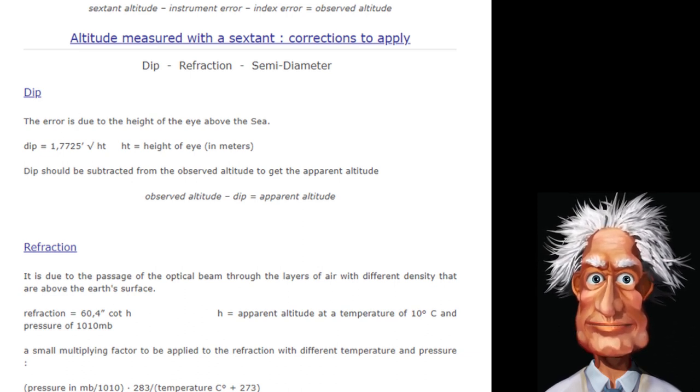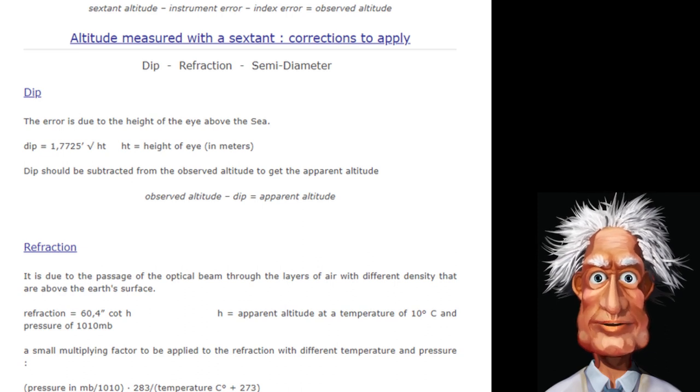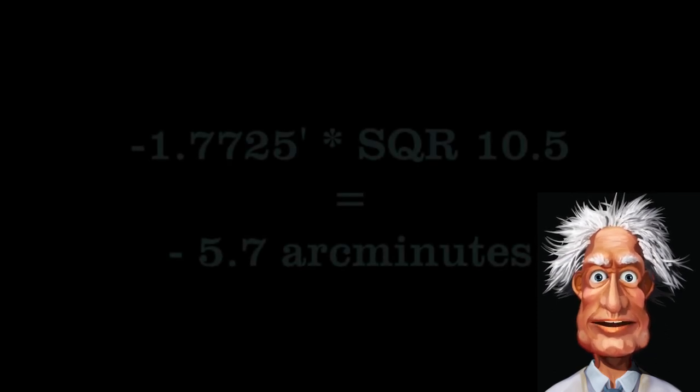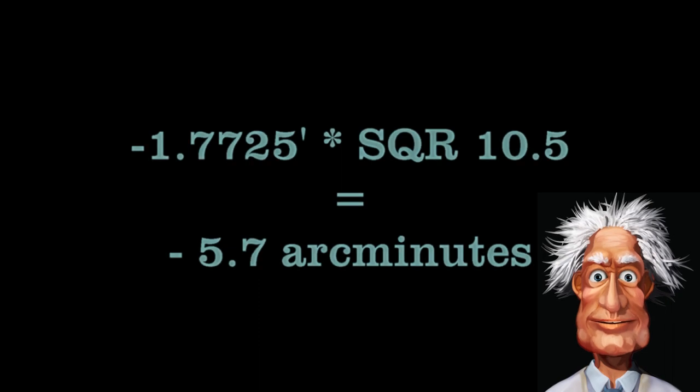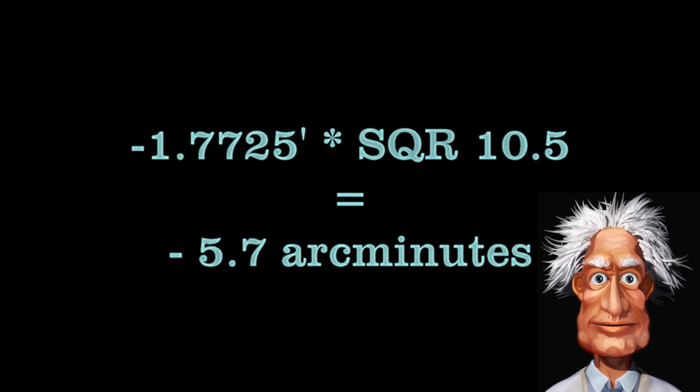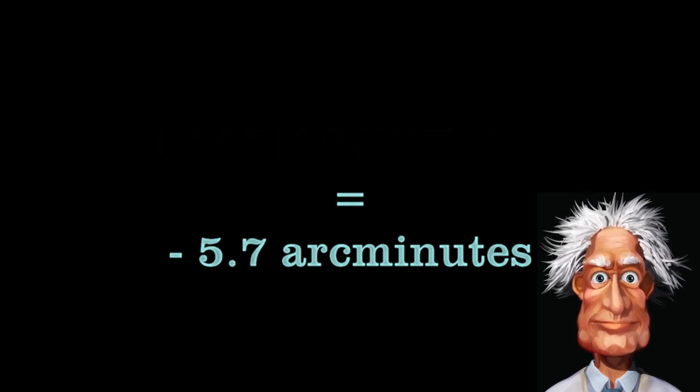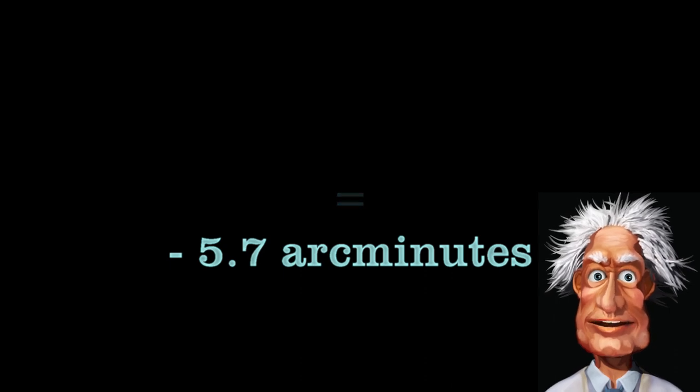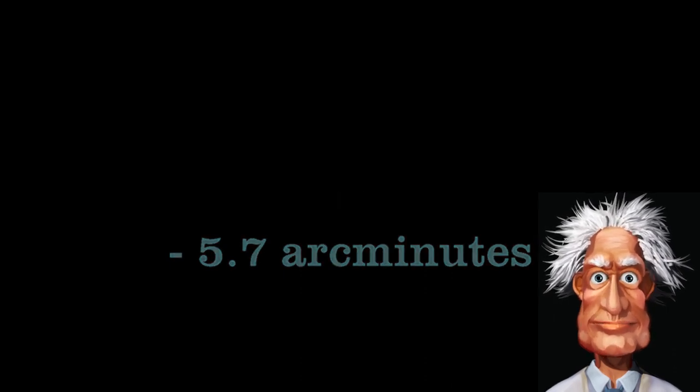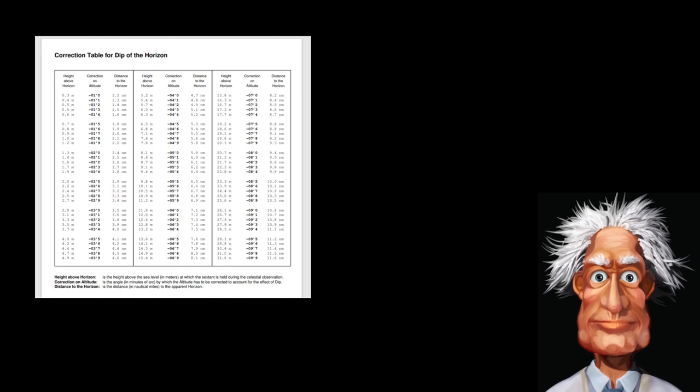There is a very simple rule of thumb to calculate this. The dip angle in arc minutes equals minus 1.7725 times the square root of the eye height in meters. So, the dip angle for an eye height of 10.5 meters will be minus 5.7 arc minutes. The dip angle is always negative. There are tables in use for this calculation. As you see, the given dip angle for 10.5 meters is minus 5.7 arc minutes.